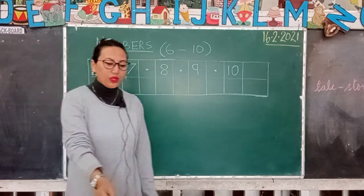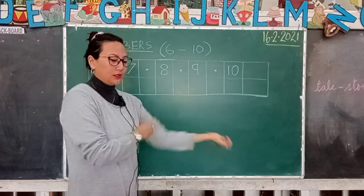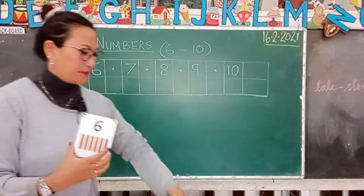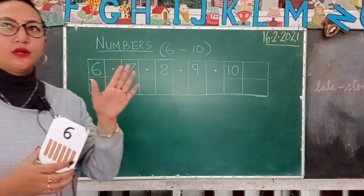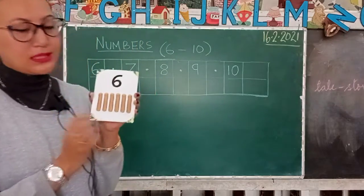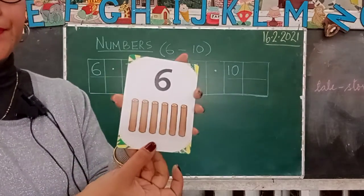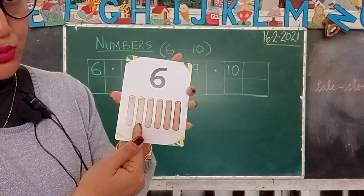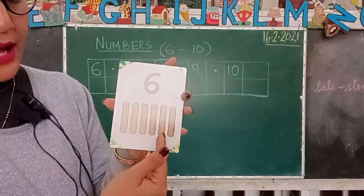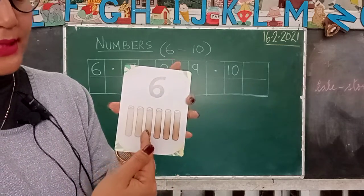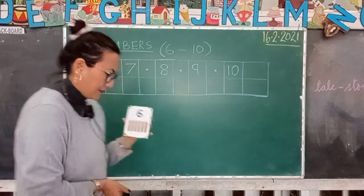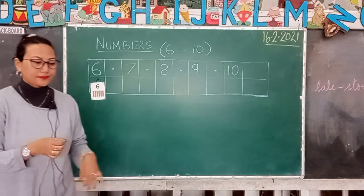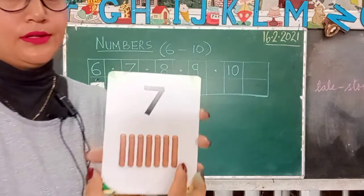Now we will learn how to count the numbers using flash cards. We already did numbers 1 to 5, so now we'll start from number 6. Let's count the sticks: one, two, three, four, five, six — how many? Six! This is number 6.